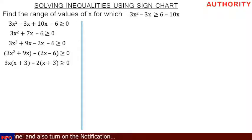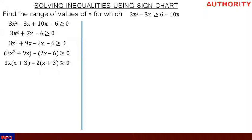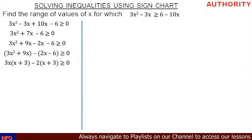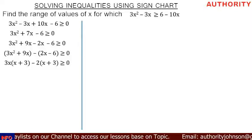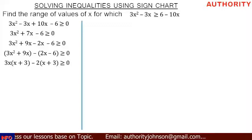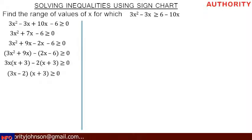In the second bracket, minus 2 is common. Factoring out minus 2 from minus 2x gives x, and from minus 6 gives plus 3, so the second bracket becomes minus 2(x plus 3), greater than or equal to 0. Now we have two brackets both containing (x plus 3). We pick the common bracket (x plus 3) and the outside values 3x minus 2, giving us (3x minus 2)(x plus 3) greater than or equal to 0.